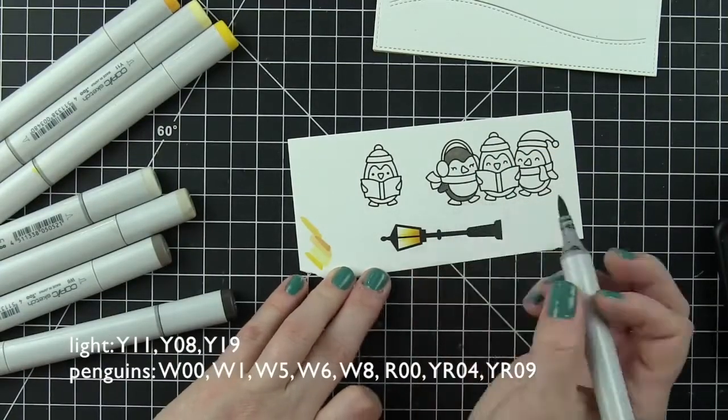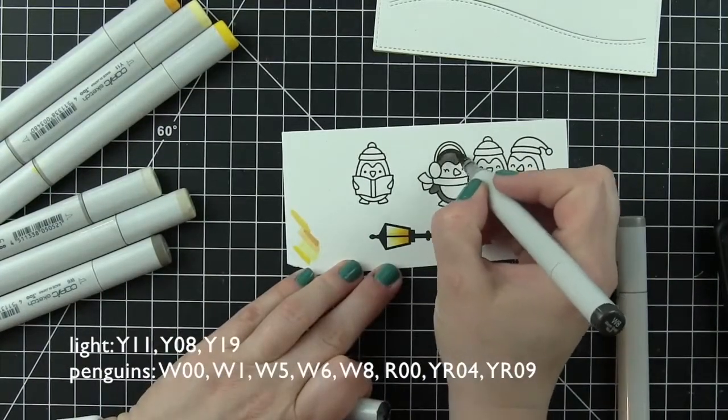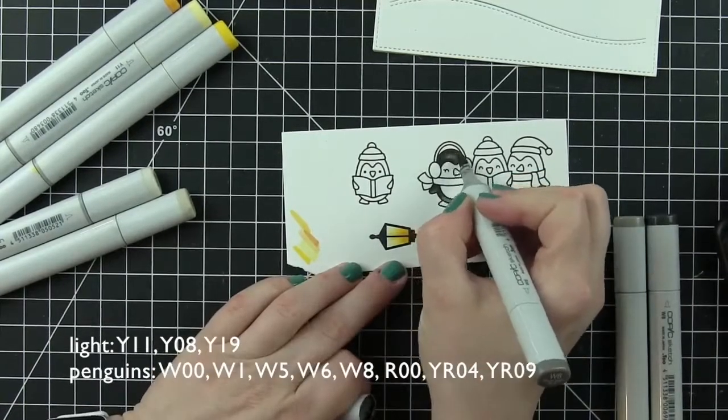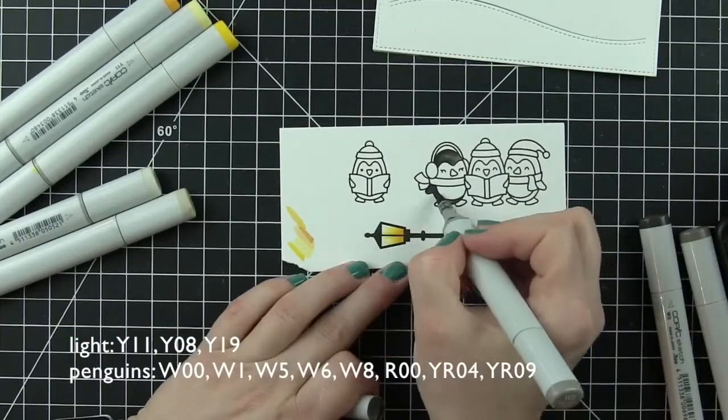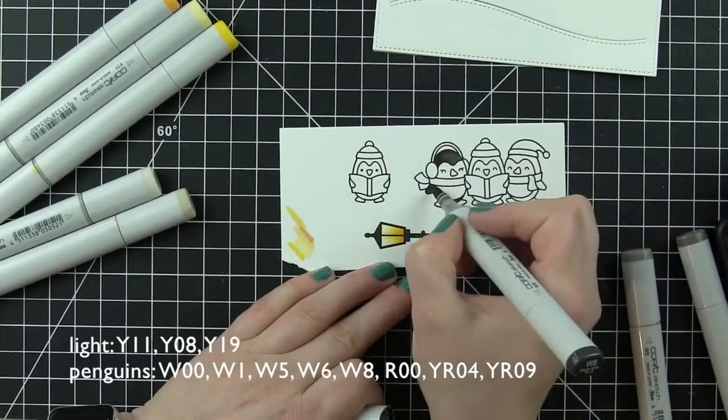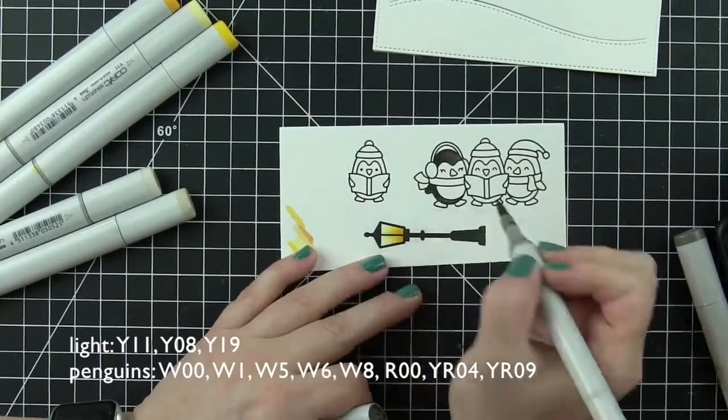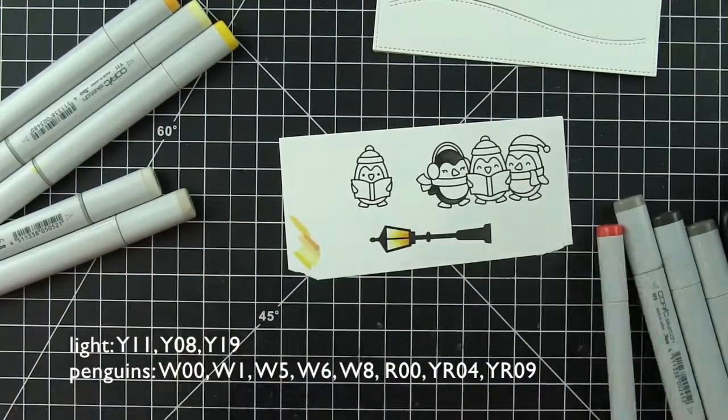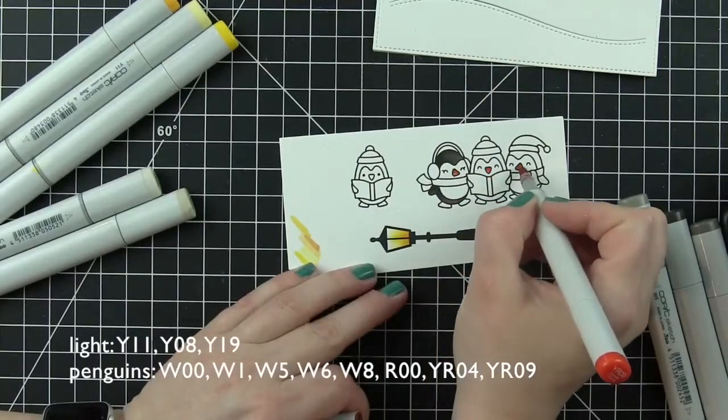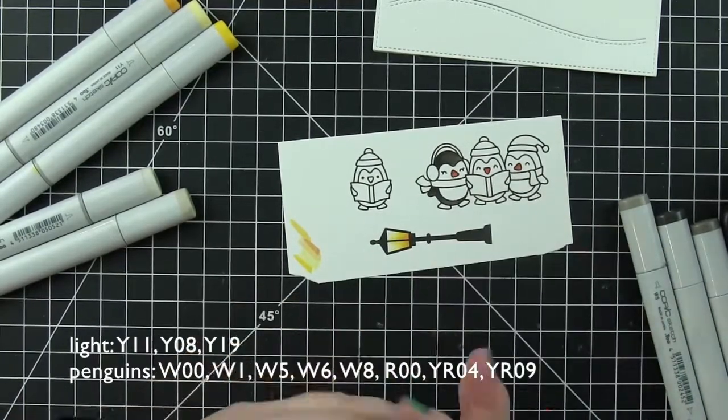In all, there's the trio of penguins set and then four individual penguins in the Here We Go A Waddling stamp set, as well as a little ringing bell, some music notes, and tons of fantastic greetings and sentiments. You can mix and match and really customize the card to work for whatever kind of seasonal card you're creating.